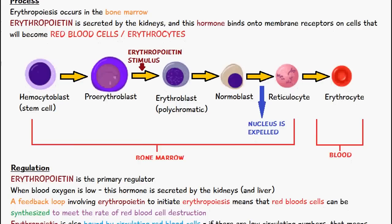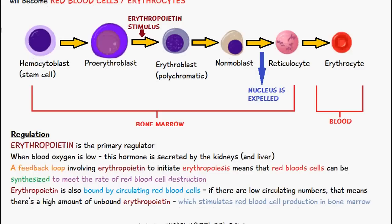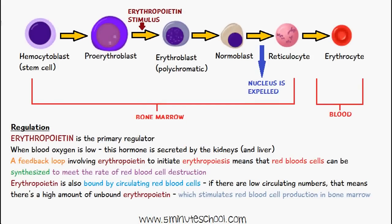Erythropoietin, secreted by the kidneys and also the liver, is the primary regulator. When blood oxygen is low, this hormone is secreted, and a feedback loop involving erythropoietin initiates erythropoiesis so that red blood cells can be synthesized to meet the rate of red blood cell destruction — which occurs in the spleen. Additionally, erythropoietin is bound by circulating red blood cells, so if circulating numbers are low, there is a high amount of unbound erythropoietin, which stimulates red blood cell production in the bone marrow.